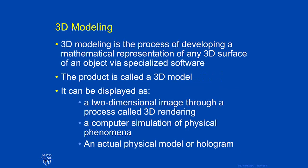3D modeling is the process of developing a mathematical representation of any three-dimensional surface of an object by a specialized software program. The product is called a 3D model. It can be displayed as a two-dimensional image through a process called 3D rendering, as a computer simulation of a physical phenomenon, or an actual physical model or hologram.